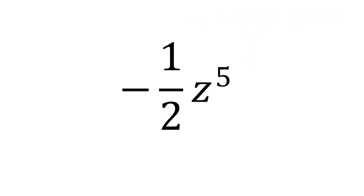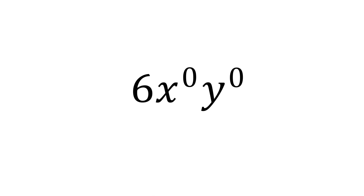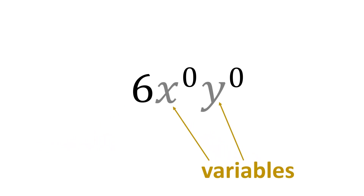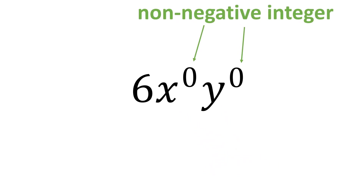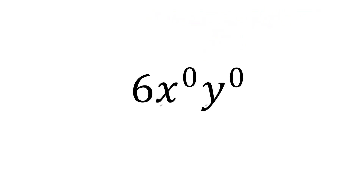A constant is a special case of a monomial. For example, 6x raised to 0, y raised to 0 is a monomial. In this case, the constant is 6, the variables are x and y, and the exponents are 0, which is also a non-negative integer. But since any variable raised to 0 is 1, then the expression reduces to a constant. So therefore, a constant is also a monomial.